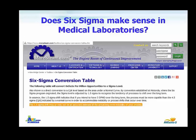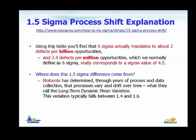This is from morestream.com. Six sigma actually translates to about 2 defects per billion, and the 3.4 defects per million you normally think of as six sigma is really a sigma value of 4.5. The 1.5 sigma difference comes from Motorola back in the 80s. I cannot see any reason to expect that viral load technology, immunochemistry, ELISA methods, etc. have the same Z-value difference as Motorola in the 1980s.